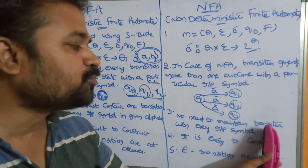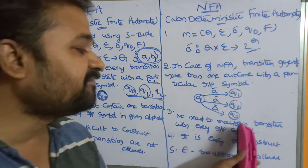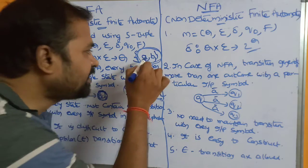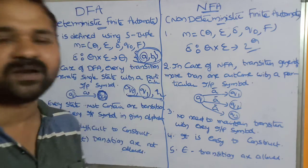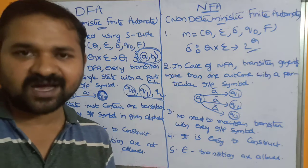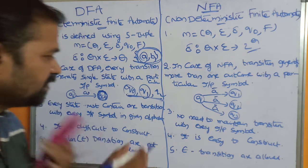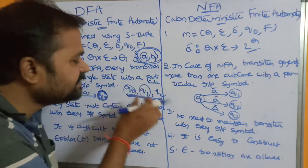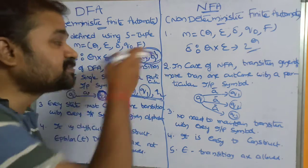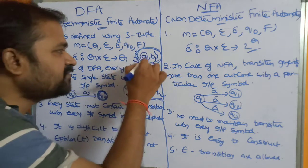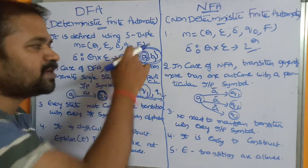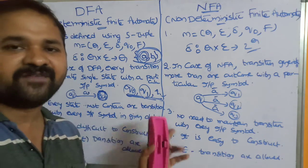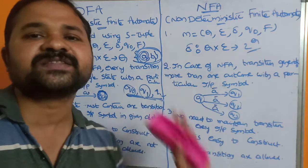In NFA, there is no need to maintain a transition for every input symbol. It is our choice — depending on the problem we can use a symbol, and if it is not consumed there is no problem. For example, if we have three states and there is no need to use 'b', we can use only one symbol. This is not possible in DFA, where every state must consume all symbols in the alphabet.